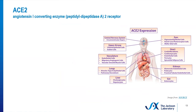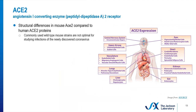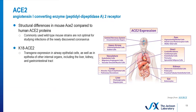There are some structural differences in mouse ACE2 compared to human ACE2 proteins. Commonly used wild-type mouse strains may not be optimal or fully relevant for studying infections of the newly discovered coronavirus. K18-hACE2 results in transgene expression in airway epithelial cells, as well as the epithelia of other internal organs, including the liver, kidney, and GI tract. You can see a map here on the right of ACE2 expression in the human body.